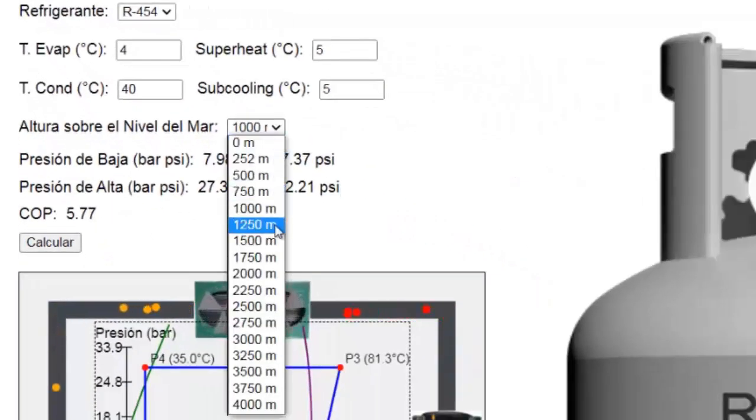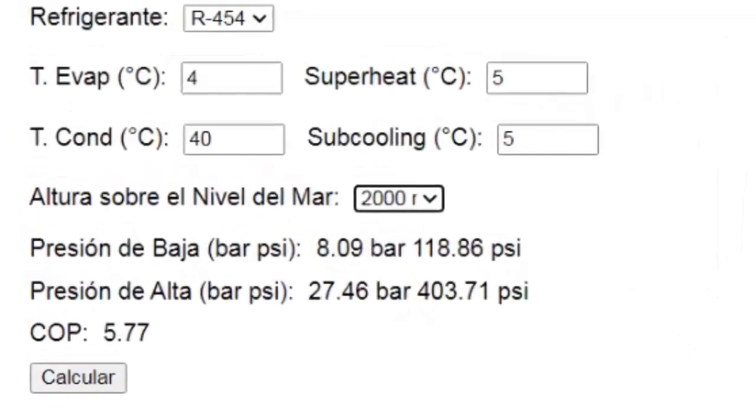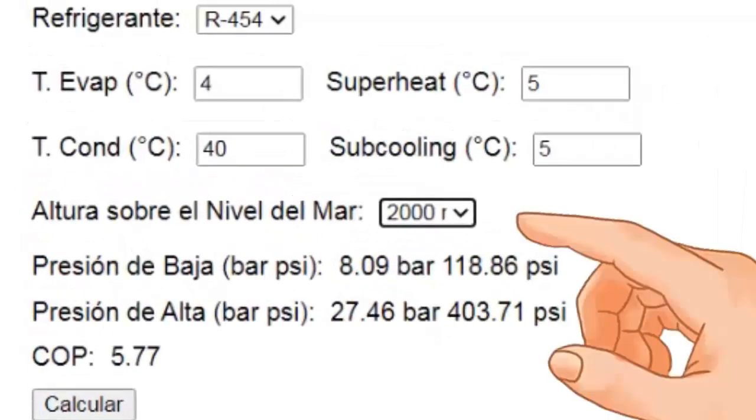At 2,000 meters above sea level, both low and high pressures change as shown in the figure.